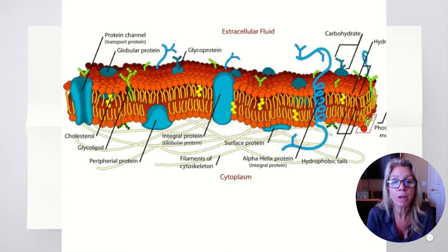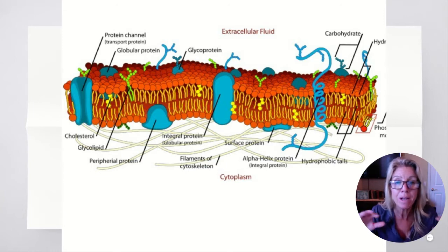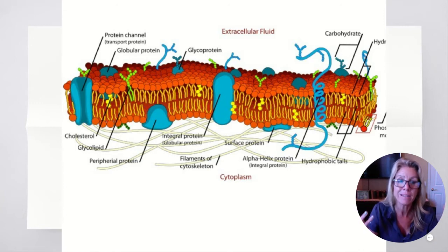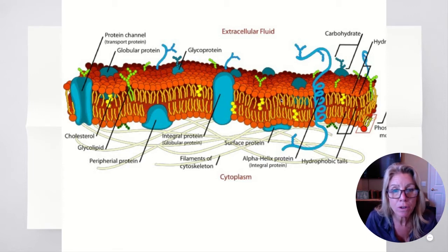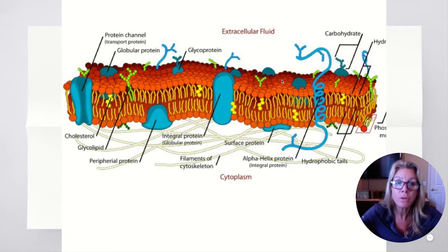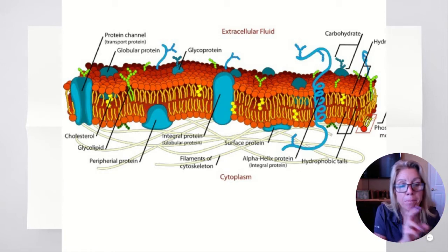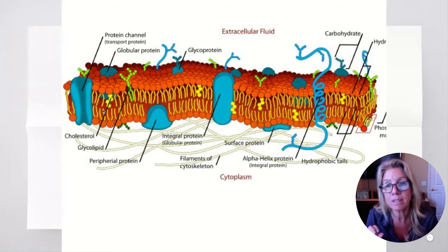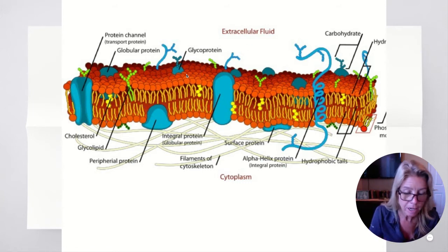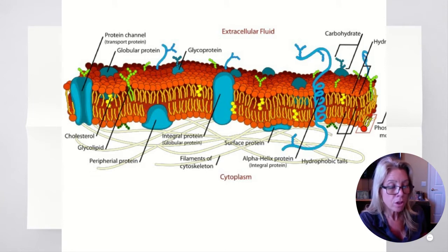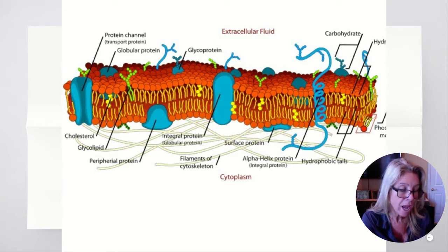The model for the cell membrane is referred to as the fluid mosaic model. The cell membrane has the fluidity and consistency of olive oil — it's the hydrophobic and hydrophilic interactions that keep its continuity. The mosaic part refers to all of these scattered proteins in and amongst it. In your notes: the fluid is the phospholipid bilayer with the consistency of olive oil, and the mosaic is the scattered proteins.